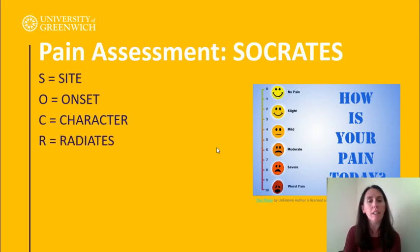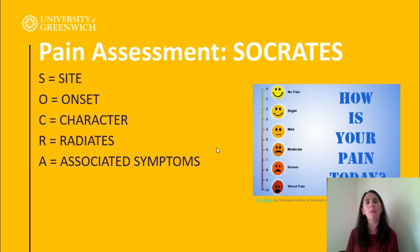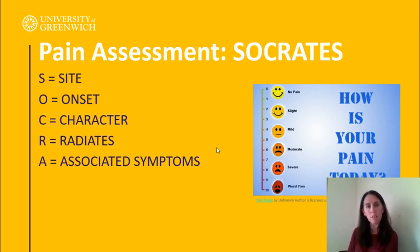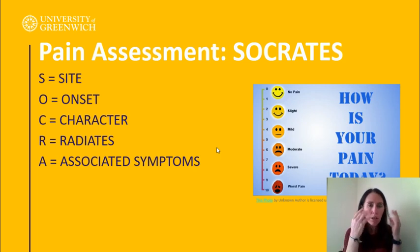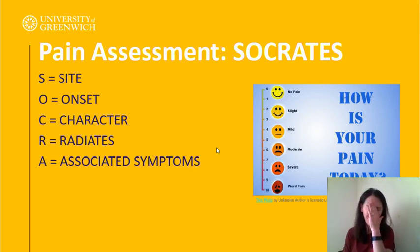R is radiates — does it radiate anywhere and how? A is associated symptoms. With my chest pain, if I'm thinking cardiac: have you had nausea, been sick, been dizzy, short of breath, had palpitations? If I'm going down a PE path: are you short of breath? Does it hurt when you lean forward? That could be pericarditis. T is timing — again, timing equals duration.